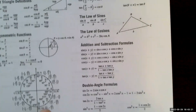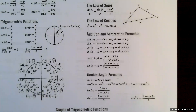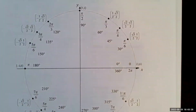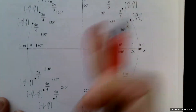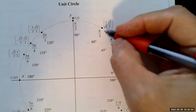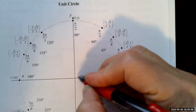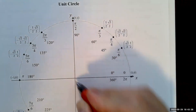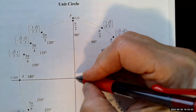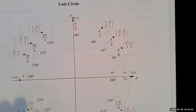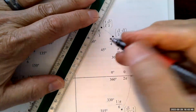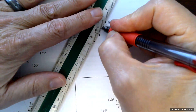I've kind of blown up the unit circle so we can see all the values. If I were to draw an angle with the initial side coinciding with the positive x-axis, and let's say the terminal side — let me grab a little ruler here — goes through this point right here.